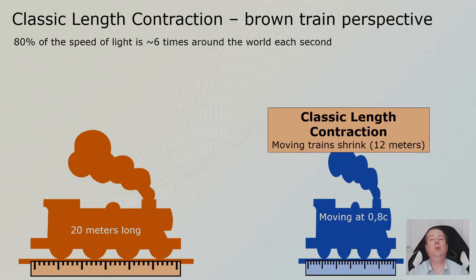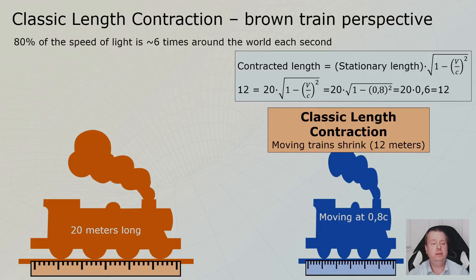And if you want to know the mathematics behind it, this is the equation. You multiply the original length, 20, with the square root of 1 minus v squared, v over c squared. And then you will get 12 meters. So this is length contraction. The C level, we will derive these equations, but for now, just believe that this is the way to calculate it.